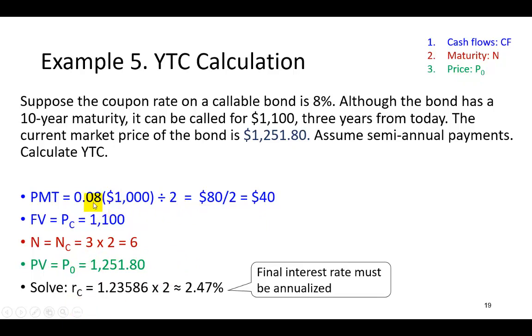But now though, this being a semi-annual bond at the coupon rate of 8% works out to be $40, which is $80 divided by 2 every 6 months. And of course, upon maturity, or in this case now, let's be careful, upon call,